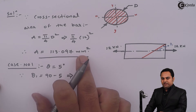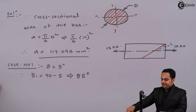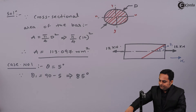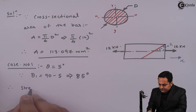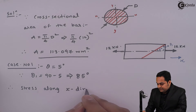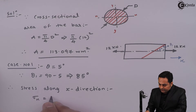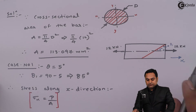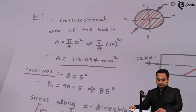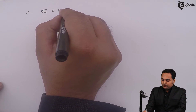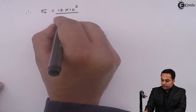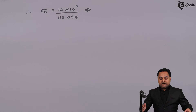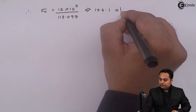Once we have the area and the load is given along the x direction, we can calculate the stress along x direction. Therefore, sigma x = load / area = 12 × 10³ / 113.097 = 106.1 Newton per mm².